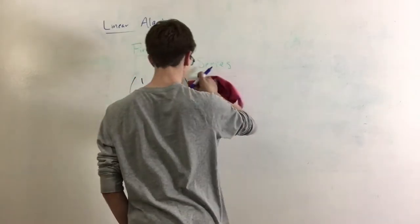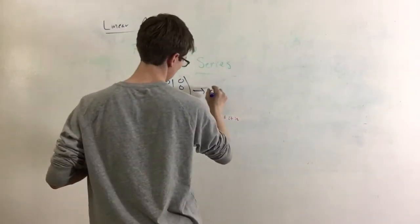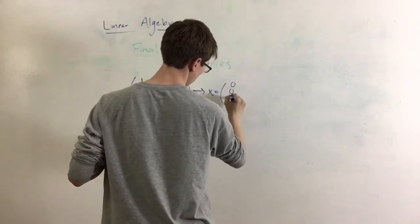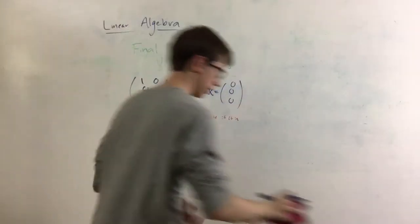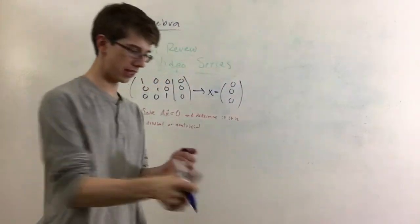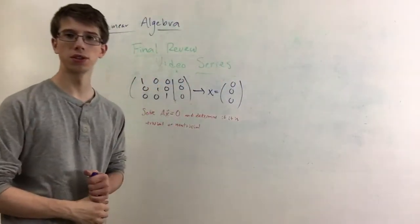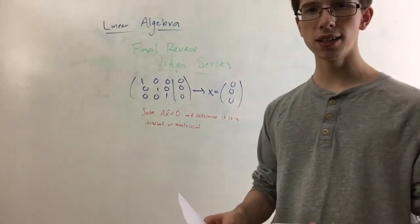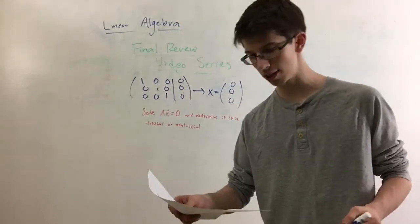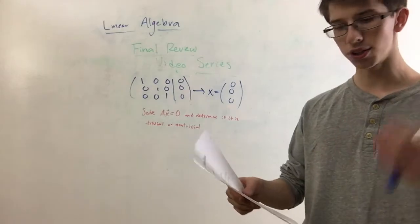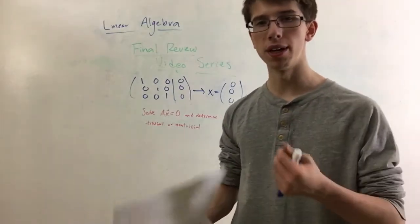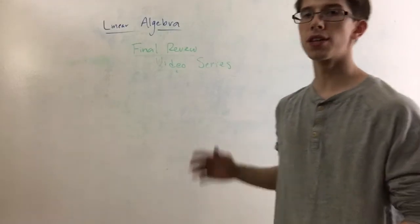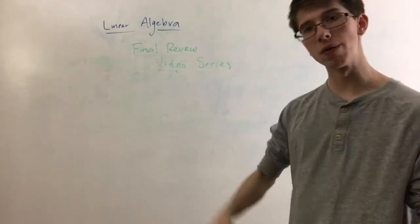So we get that the solution to this is that x is equal to the zero matrix. So in this case, this is a trivial solution. In the link below, you'll find the final review packet, which will be updated as this series progresses. It has a bunch of essential questions, concept problems, and at the end will be a few practice problems. After that warm up, we determined that the solution was trivial.